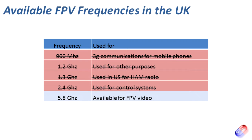2.4 gigahertz is a very busy band — things like Bluetooth use it, and if you look at the frequency on the side of your microwave at home you'll find that works on 2.4 gigahertz as well. That is the one most people use for their control systems — Taranis, Spectrum, and others. Your radio is probably sending information to fly the craft on 2.4 gig. We can't use 2.4 gig for both control and FPV at the same time, because they would overlap, giving you messy video and causing you to lose control of your craft. So that leaves 5.8 gigahertz available for FPV video here in the UK.